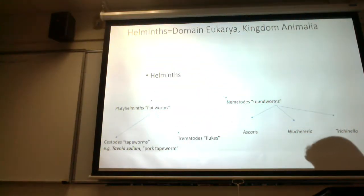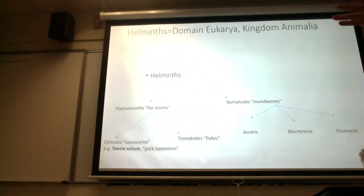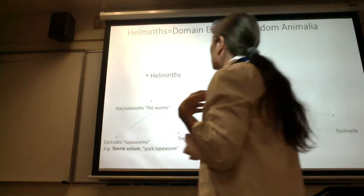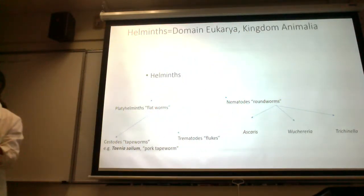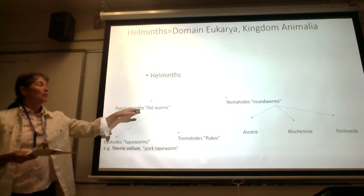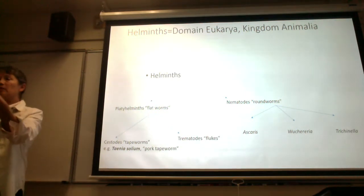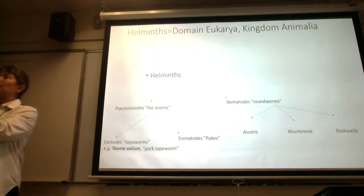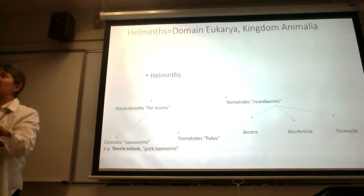So this is a concept map, folks, with regard to one way to classify our helminths, our parasitic worms. So we can divide them into two big categories based on their body type. The platyhelminths are also called flatworms because if we took a platyhelminth and cut it in cross-section, the body looks flat - and hence flatworms.